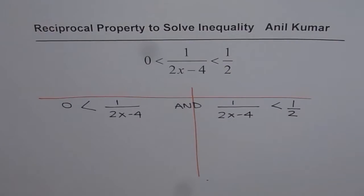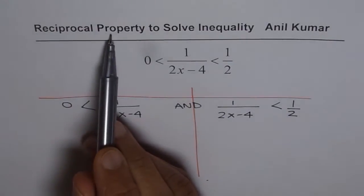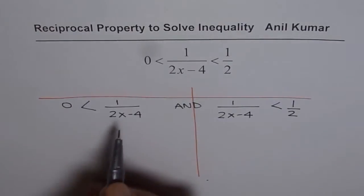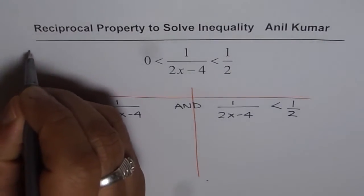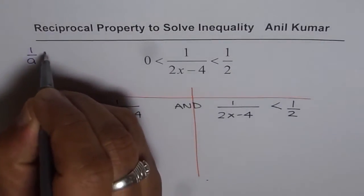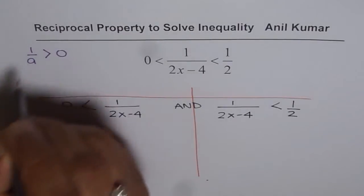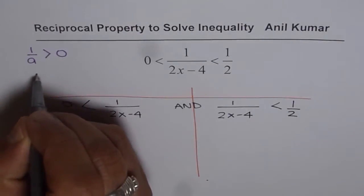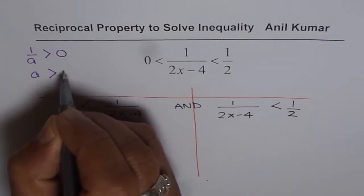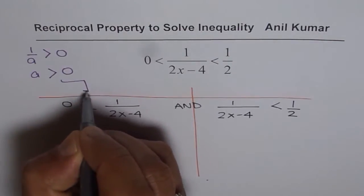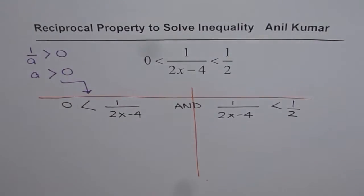We are using the reciprocal property to solve this. If 1/a > 0, that means 1/a is positive, so we can say a > 0. That is the property we will apply here.